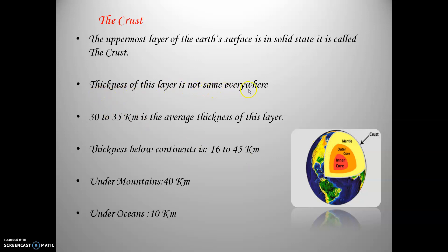The thickness of this layer is not the same everywhere. At some places the thickness is more, whereas at some places it is less. The average thickness of this layer is 30 to 35 kilometers. Starting from the surface of the Earth and going down into the interior, 30 to 35 kilometers is the thickness of the crust.